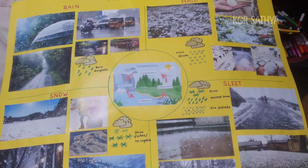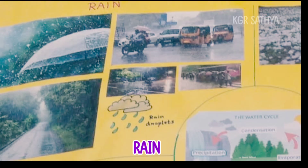Types of precipitation. 1. Rain. Rain drops are made of tiny water droplets that come together when it rains. When those droplets fall from the sky, they moisten the ground.